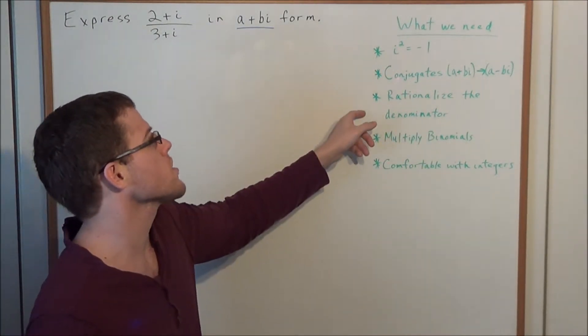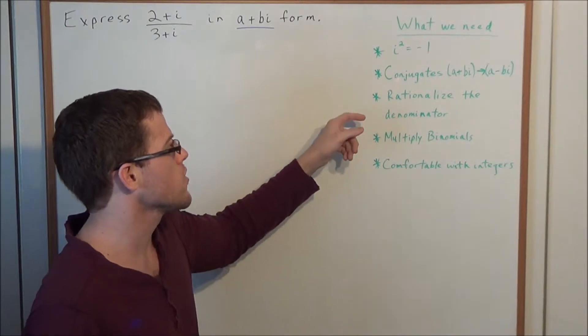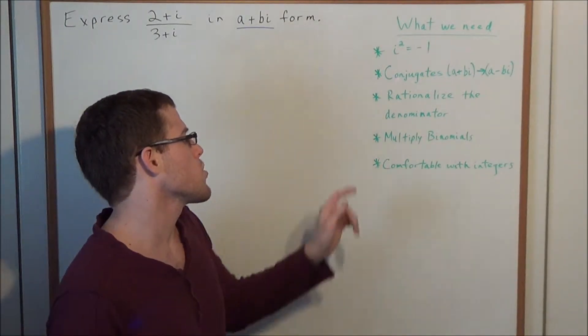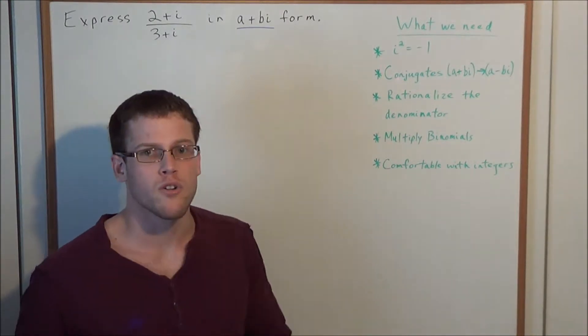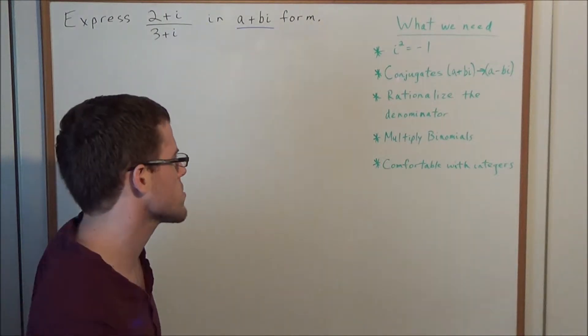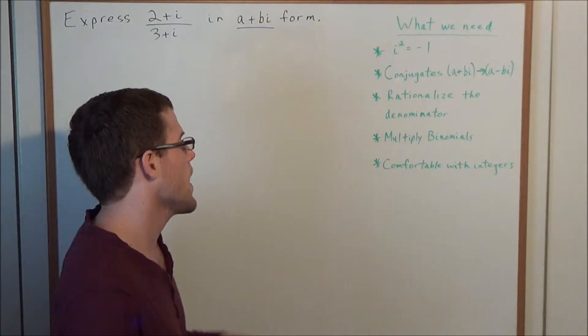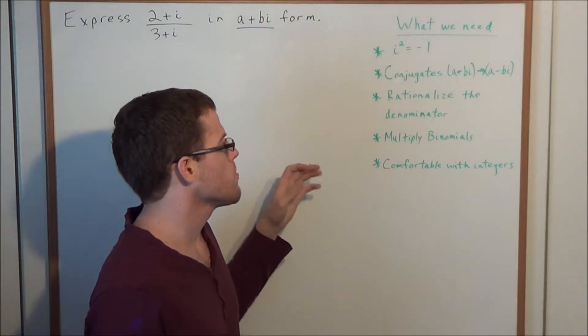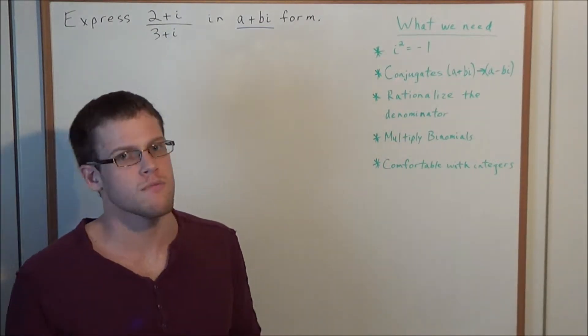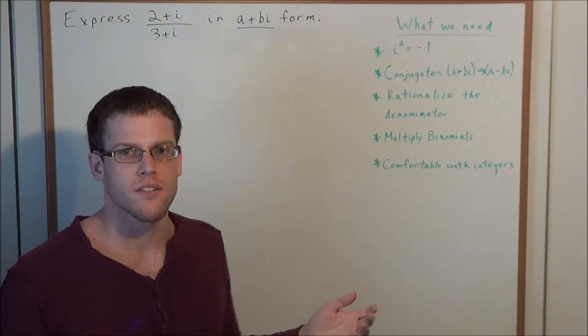In particular, we're going to utilize this concept of conjugates in order to rationalize the denominator in this problem. And we also need to know how to multiply binomials, which is really just utilizing the distributive property, but as most teachers will show this, this is the foiling process. And next, we need to be comfortable with working with integers. We need to know how to add them, subtract them, multiply them, whether or not they're positive or negative.